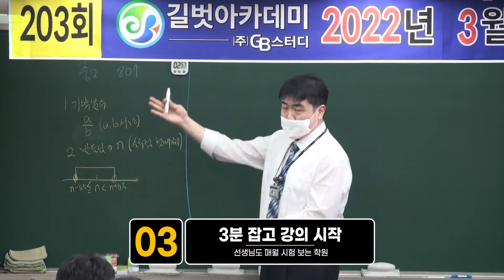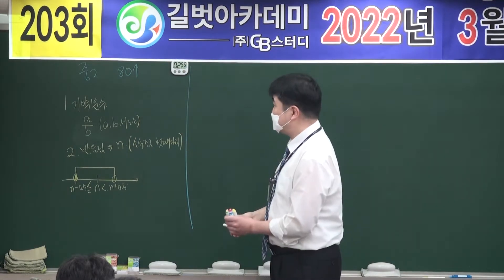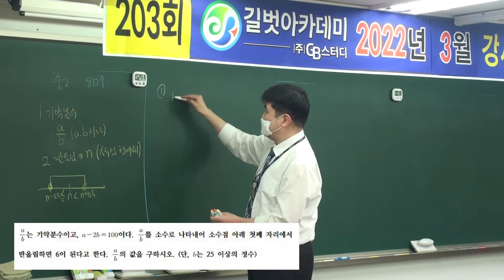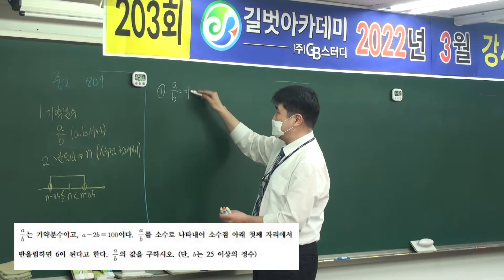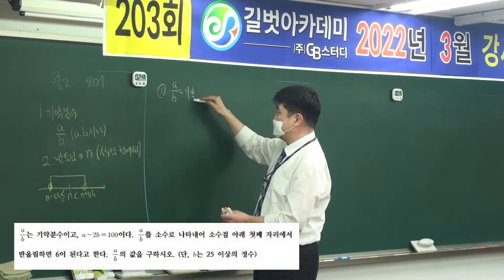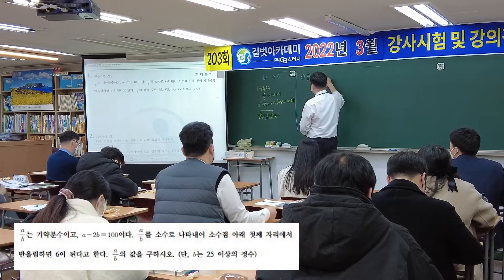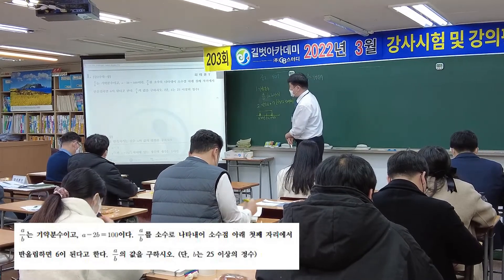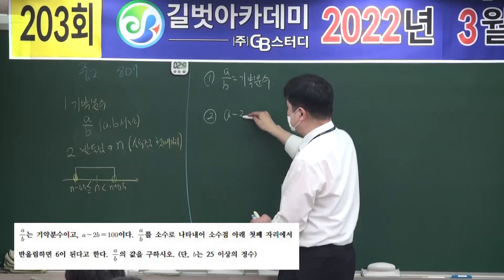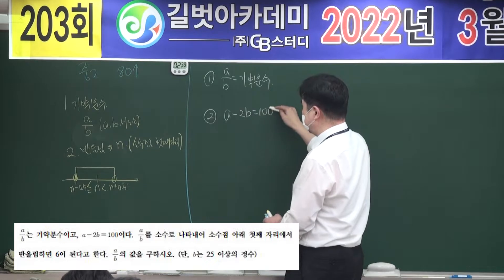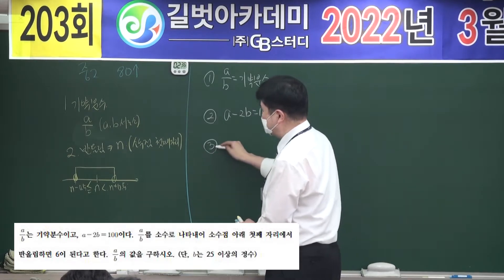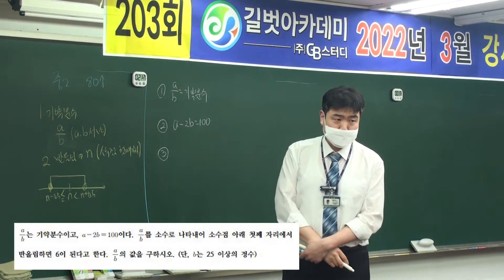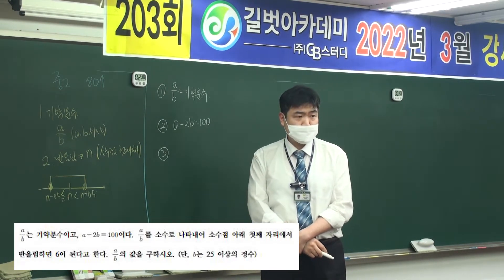일단 문제에 써 있는 특징들 몇 가지를 적어놓고 시작하면: 첫번째, b분의 a는 기약분수라고 했고, 2nd: A minus 2B equals 100, 3rd: B equals 25. Students can work with these conditions.